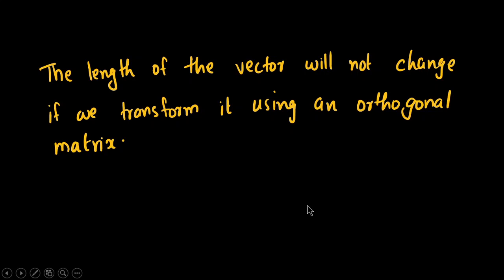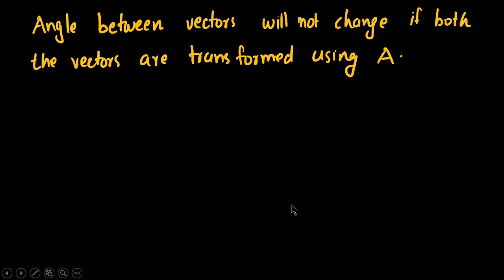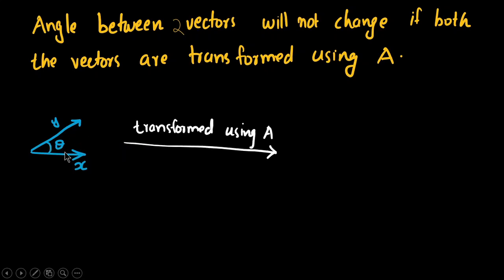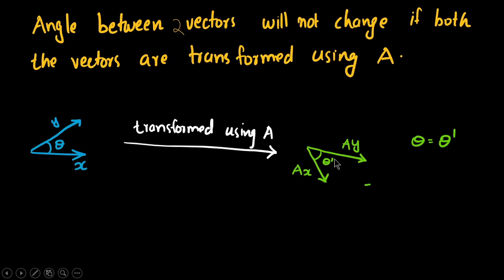The length of the vector will not change if we transform it using an orthogonal matrix. Using an orthogonal matrix, the transformed vector will have the same length as the original. Additionally, the angle between two vectors will not change if both vectors are transformed using the same orthogonal matrix A. Suppose we have two vectors x and y with angle theta between them. After transforming both by A, we get Ax and Ay, with angle theta dash between them, and theta dash equals theta.